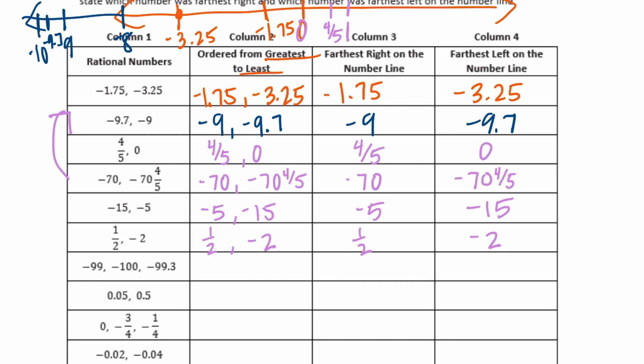We have three numbers now: negative 99, negative 100, and negative 99 and 3 tenths. The greatest one is going to be negative 99, then negative 99 and 3 tenths, then negative 100. Furthest to the right, or the greatest, is negative 99. Furthest to the left would be negative 100.